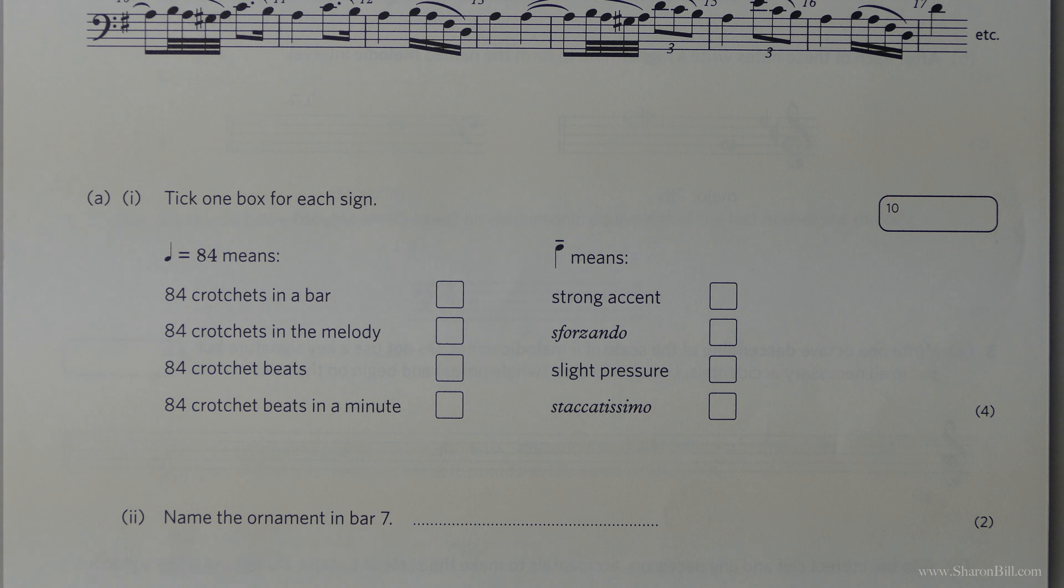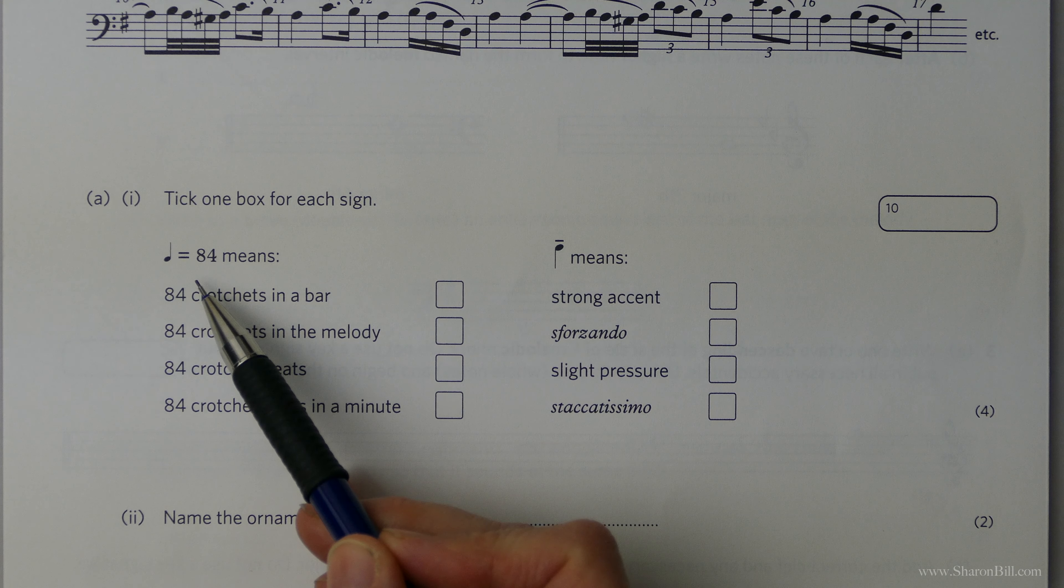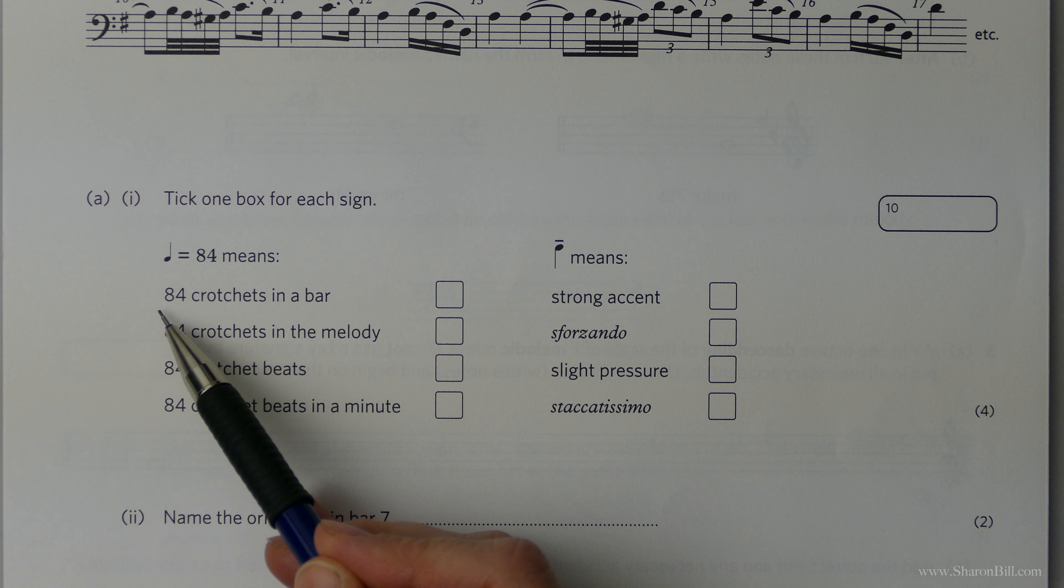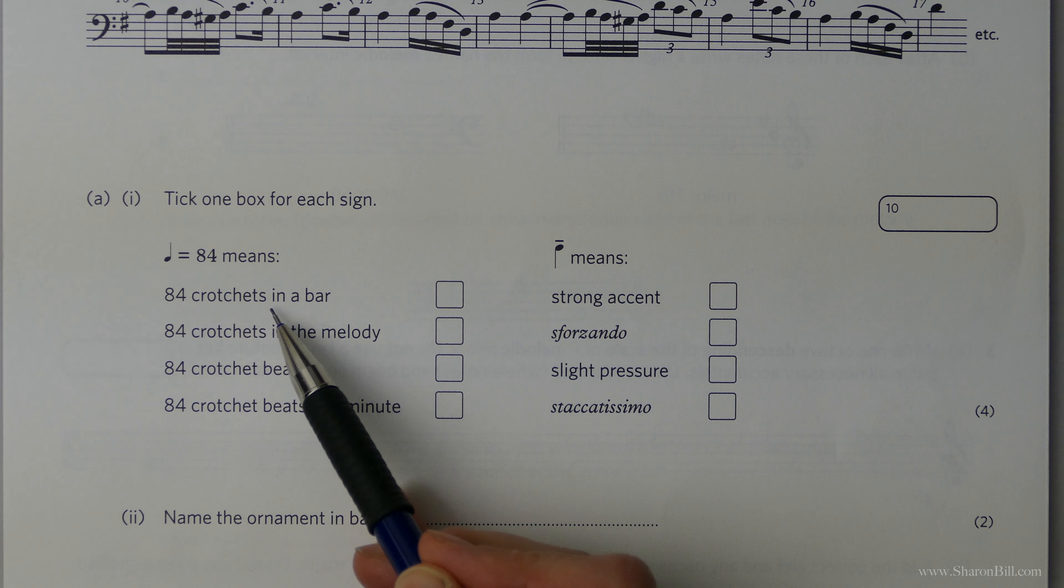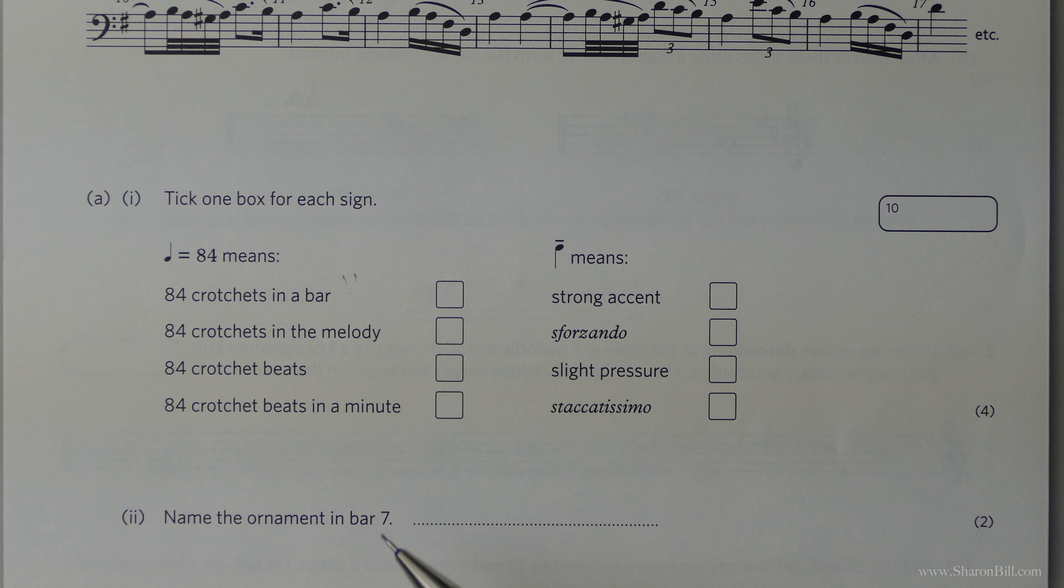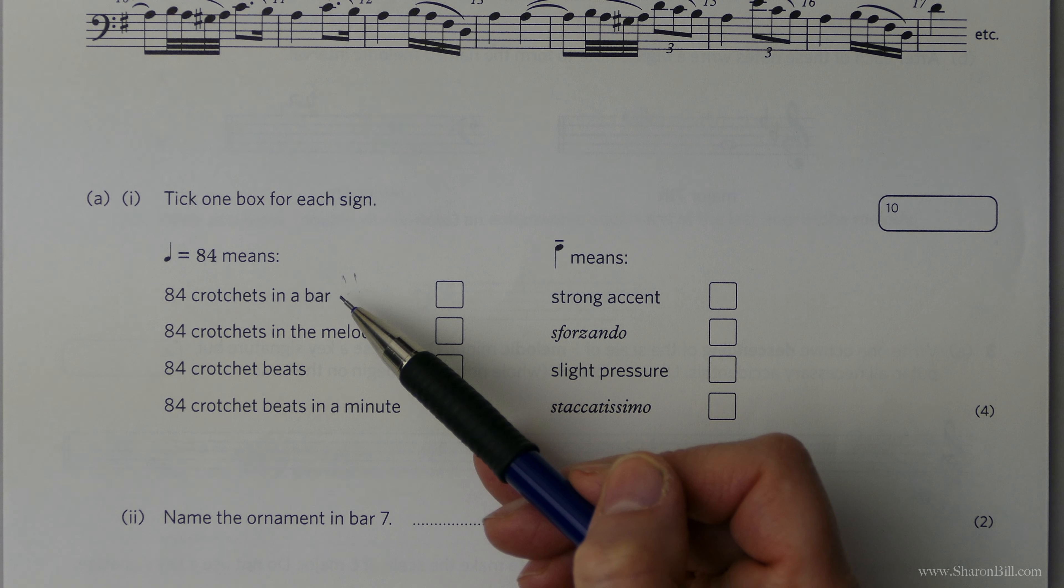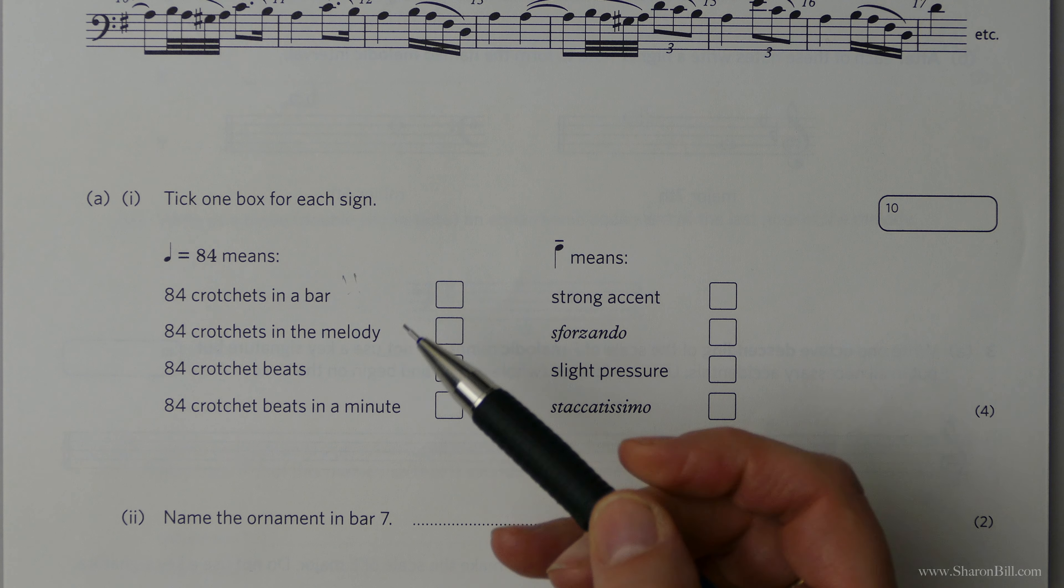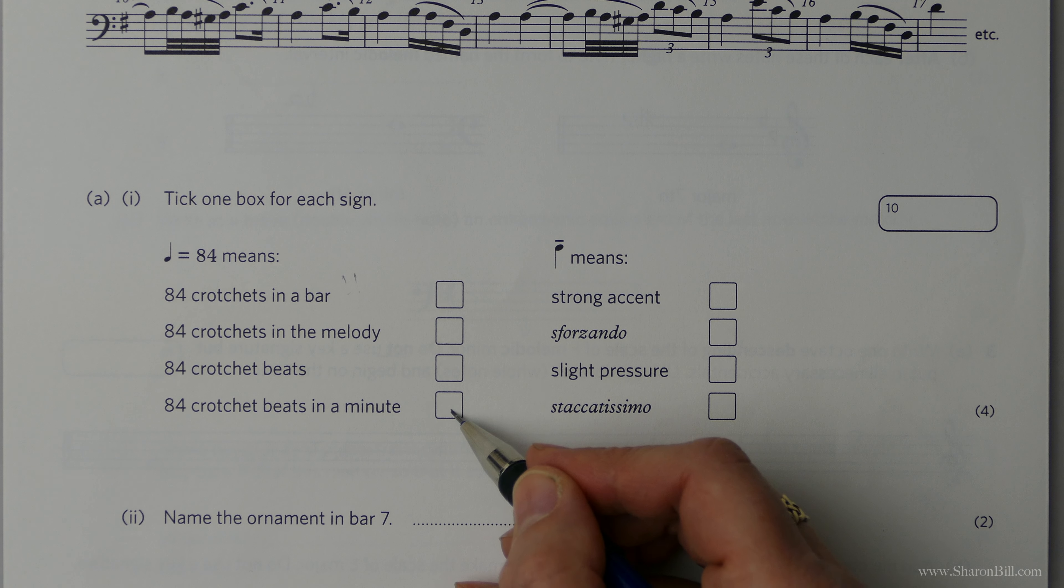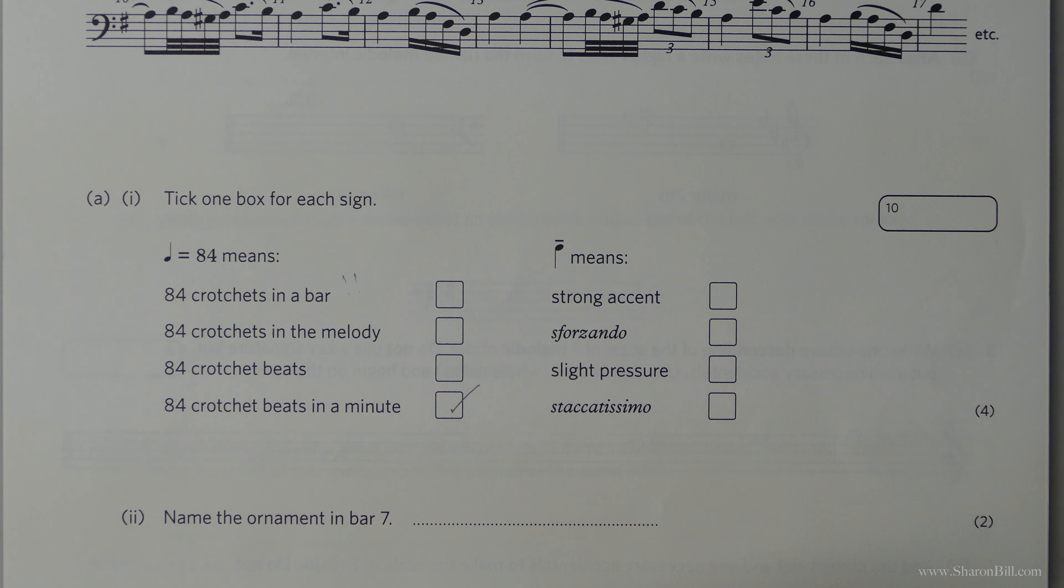So, this is a metronome marking. Just watch out though, it certainly does not mean 84 crotchet beats in a bar. Can you imagine the time signature for that? So just watch out that you don't get lulled into a false sense of security. It's 84 crotchet beats per minute. So we know the tempo, how fast we should be performing this.